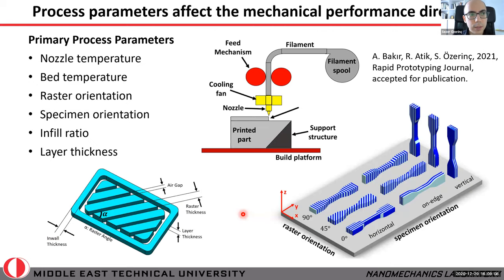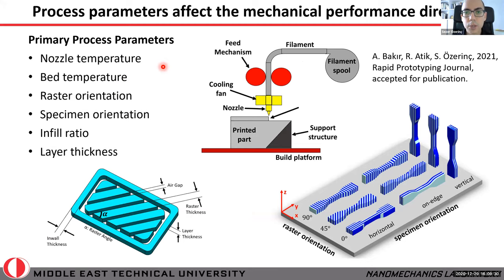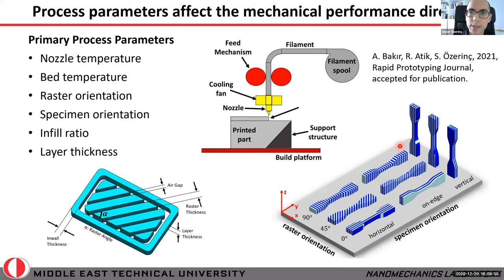The properties of FDM materials depend heavily on process conditions. Using the same plastic and the same printer, you can get very different mechanical behavior depending on how you print. Primary process parameters include nozzle temperature, bed temperature, raster orientation, specimen orientation — whether printing horizontally, vertically, or sideways — infill ratio, which controls how much material is deposited, layer thickness, and many other factors.